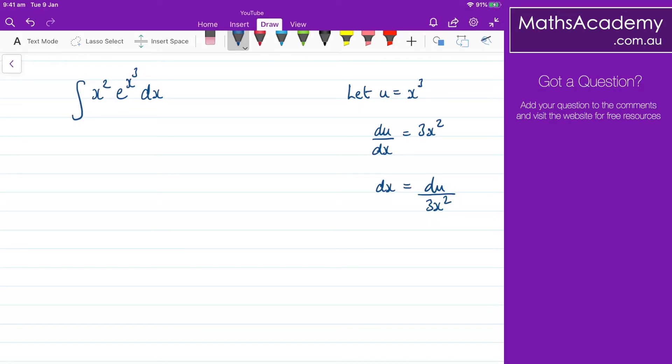Now that I have those, I can do some substitution into this integral here. So we have the integral of x squared. Well, x squared, I'll just leave as it is, just for the time being. I've got e to the x cubed, but x cubed is now u. And dx, well, dx is du over 3x squared. Now, what you should notice is that the x squared terms will cancel. So this x squared, I can cancel with this one.